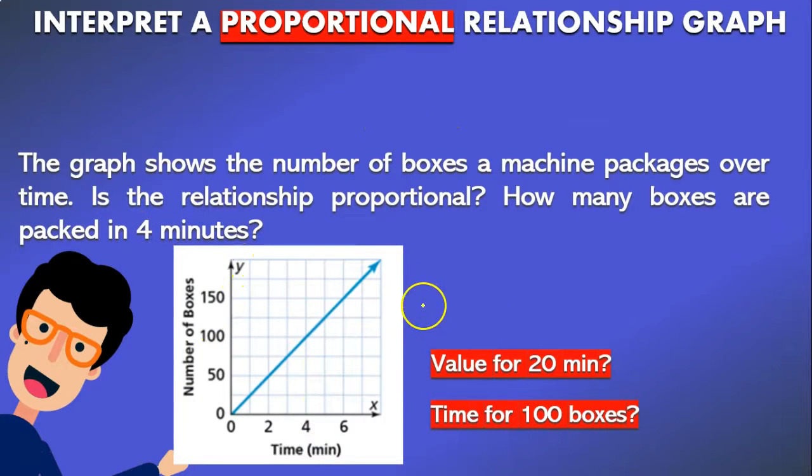But what if we are asked for a value of 20 minutes that is not inside the graph, it is outside the graph? Well, you can use the formula. Y equals k times x. So the value for the amount of boxes is equal to 25 which is our constant of proportionality times 20. And that means 25 times 20 is 500. So that is the amount of boxes or the value we have for 20 minutes.